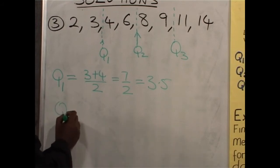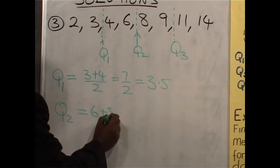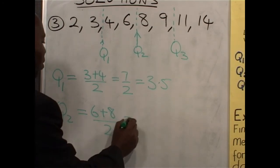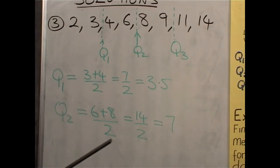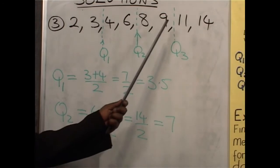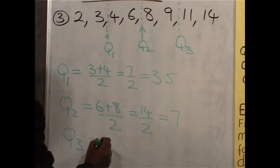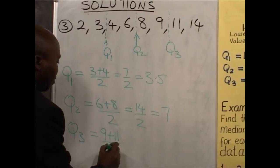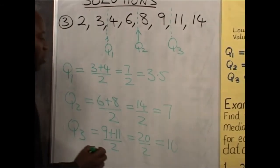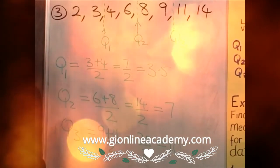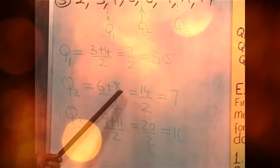The median Q2 will be the average of 6 and 8, which are the two middle numbers. This will be 14 divided by 2, and the median will be 7. The upper quartile Q3 will be the average of 9 and 11. So Q3 will be 9 plus 11 divided by 2 — that is 20 over 2 — and the upper quartile is 10. So depending on the number of values you have been given, you will be able to calculate the lower quartile, the median, and the upper quartile.